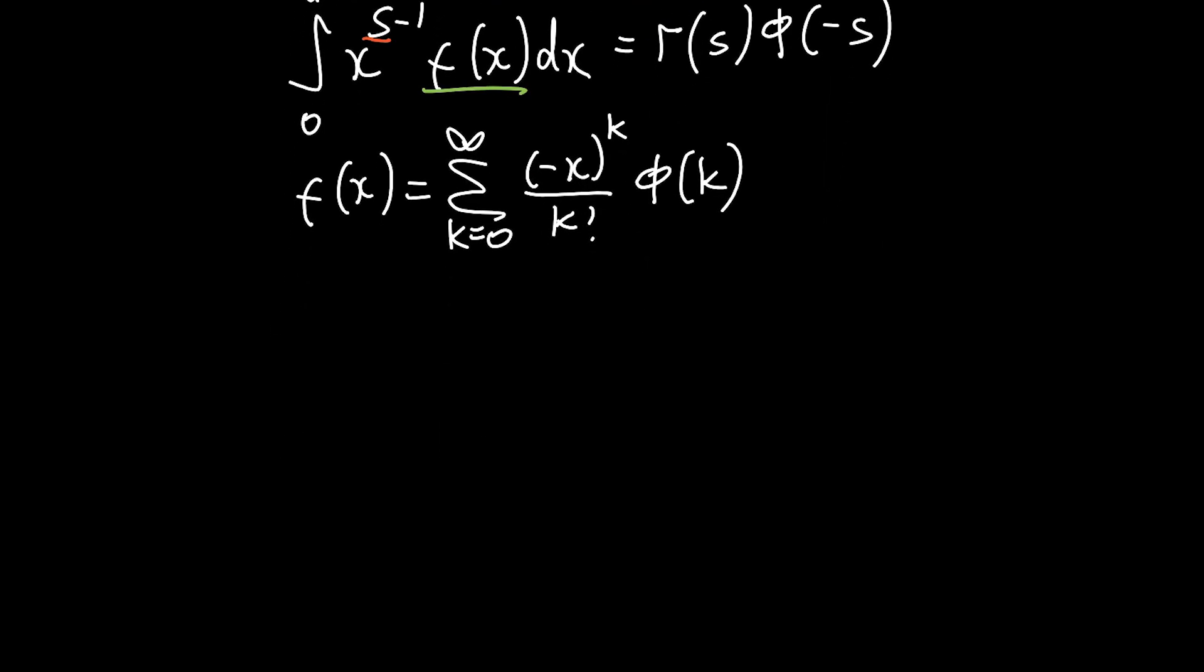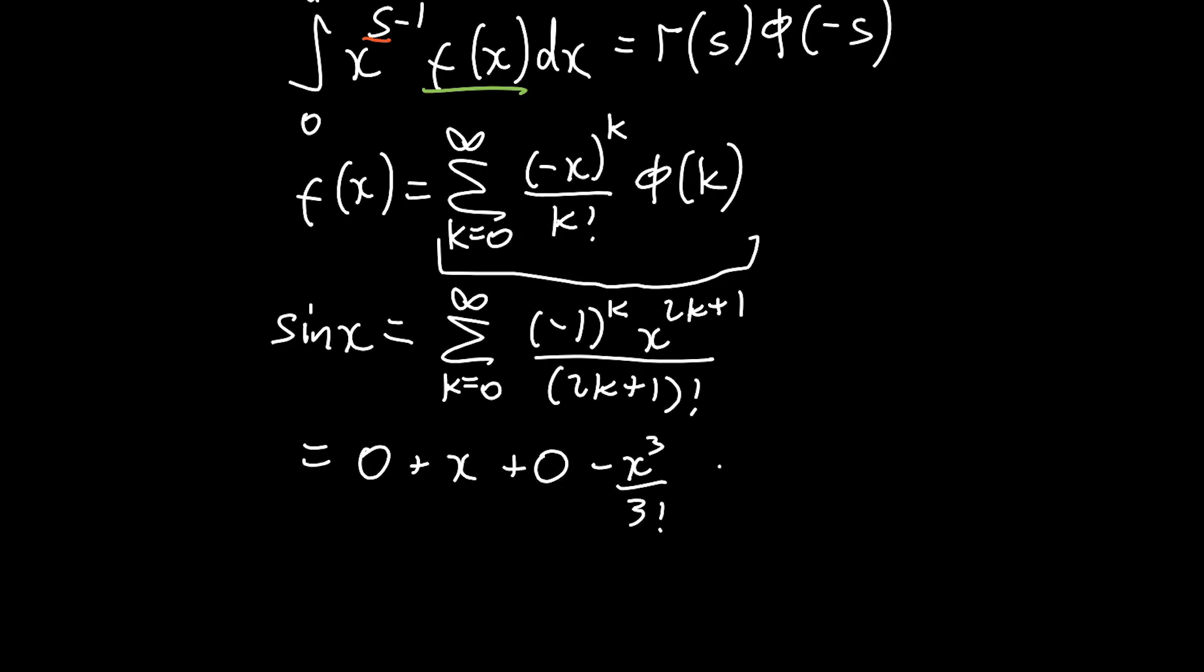So let's think about this. What we want to do is we want to write sine x in this series above. We want to write sine x in this form and basically find what phi of k has to be such that f of x is sine x. Now we know what the Taylor series of sine x is: k equals 0 to infinity, minus 1 to the power of k times x to the 2k plus 1 over 2k plus 1 factorial. So if we're actually to write this series out, we can say that it's 0 plus x plus 0 minus x cubed over 3 factorial plus 0 plus x to the 5 over 5 factorial and so on.